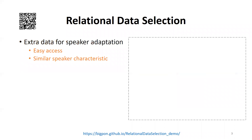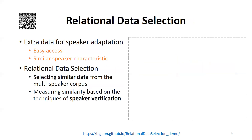It is straightforward to select suitable data from an easily accessible extra multi-speaker corpus for the target speaker adaptation. Therefore, we propose a relational data selection approach to select data with characteristics similar to those of the target speaker.